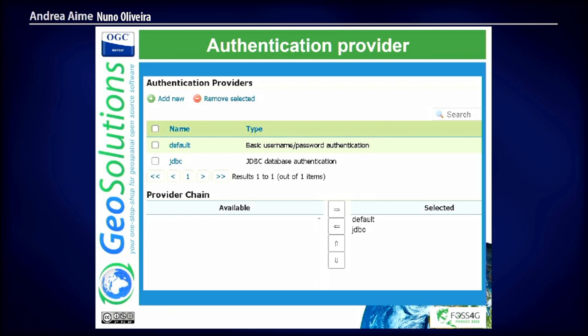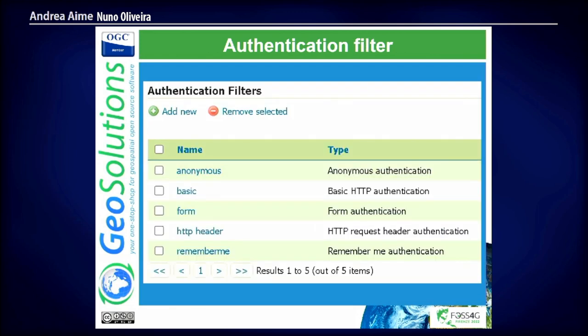The authentication filters are the components able to extract authentication information. The first is the anonymous filter — it doesn't extract anything. The basic one extracts the basic token from the HTTP request. The HTTP header filter is very common for organizations that have so many layers of authentication that when a request reaches your server, there is no need for further authentication — we just get the user name in the header and trust it. The remember-me filter works when you're in the server portal administration, moving between pages — it remembers you and doesn't ask for login again.